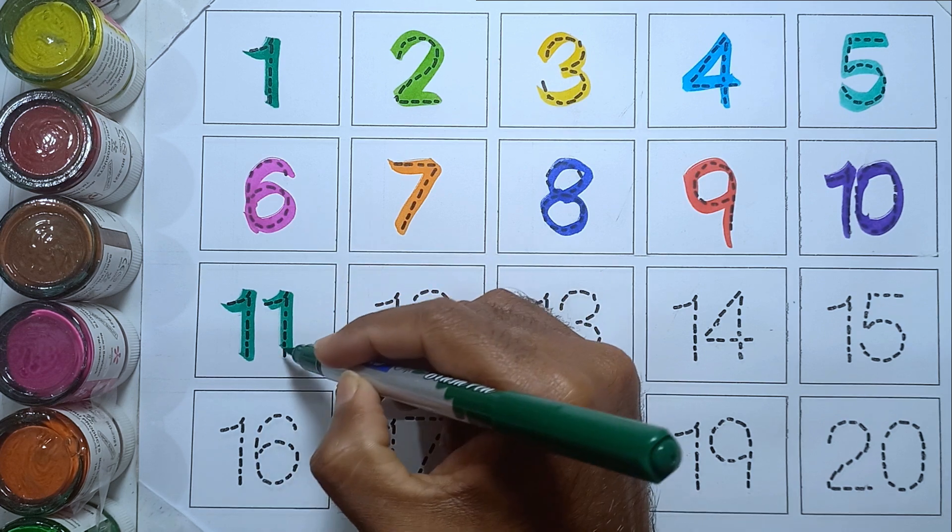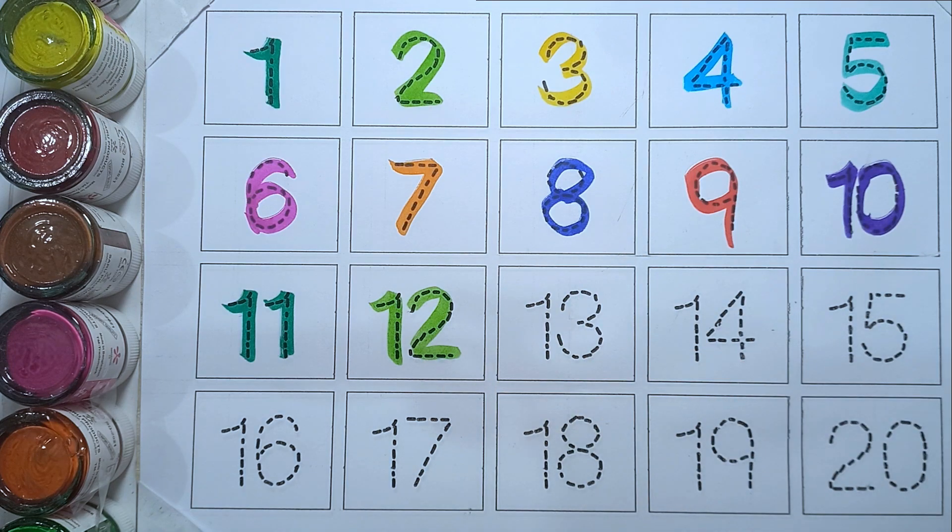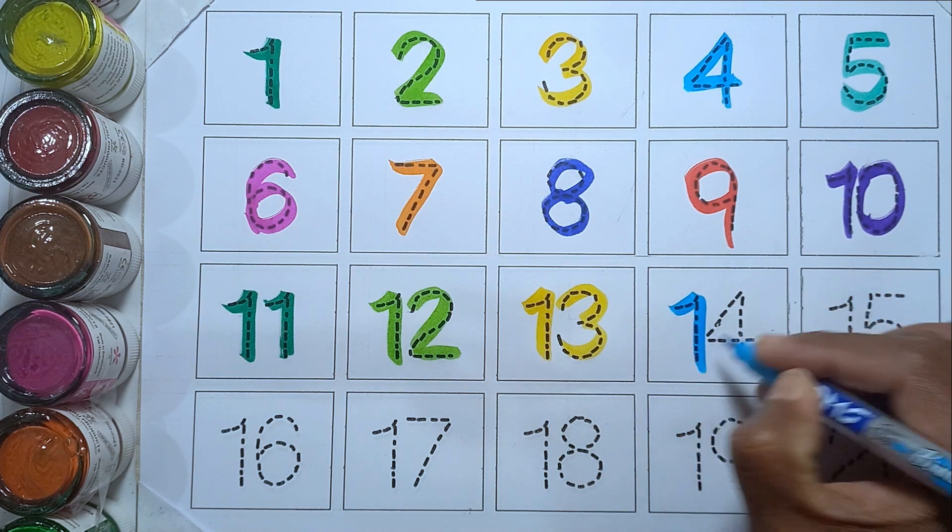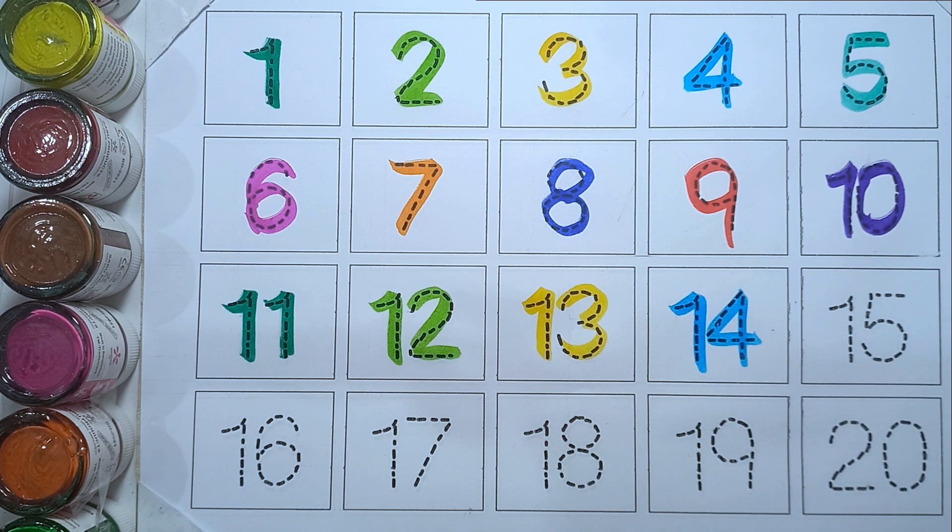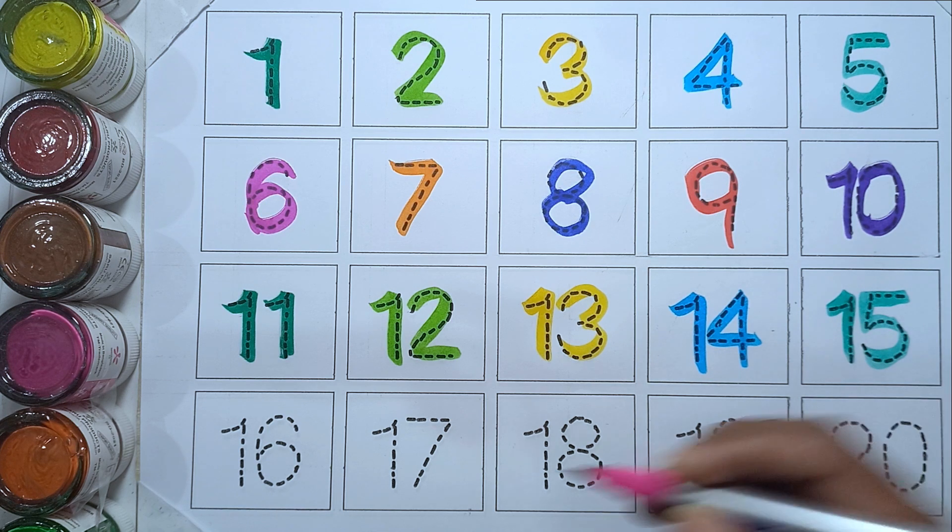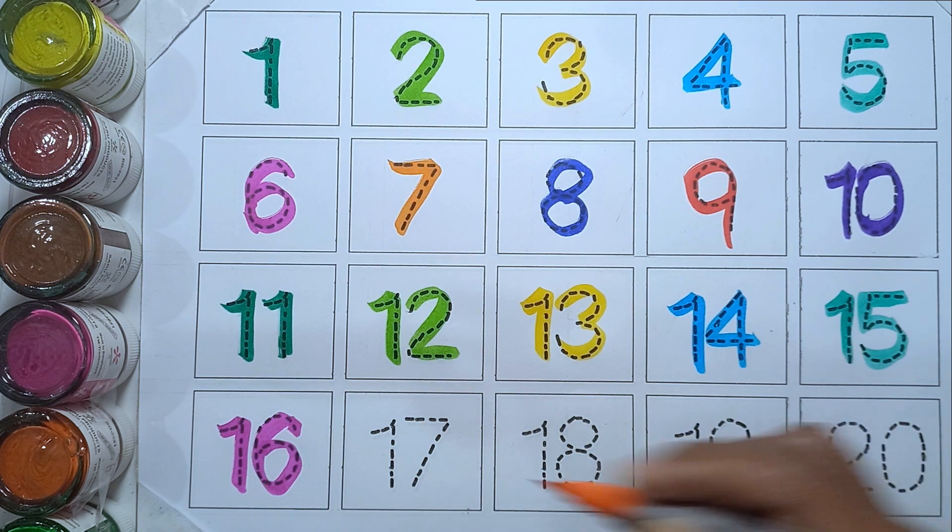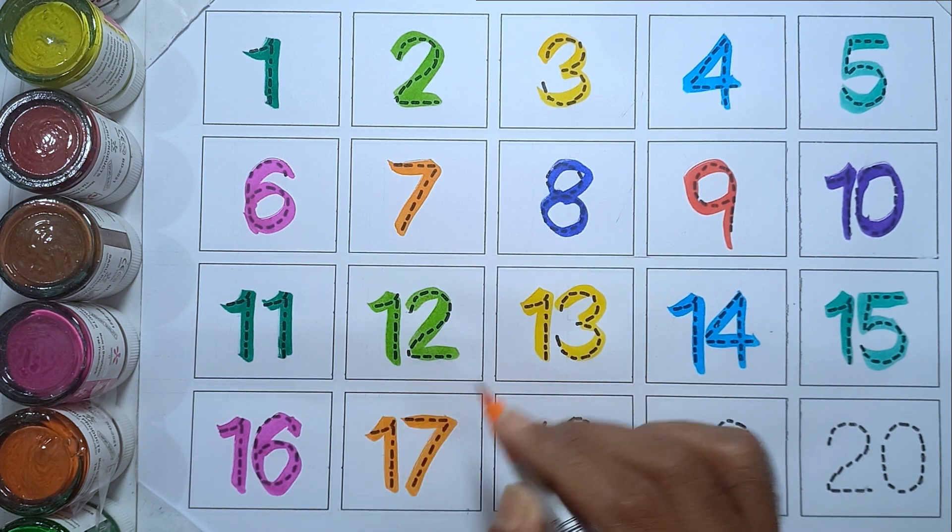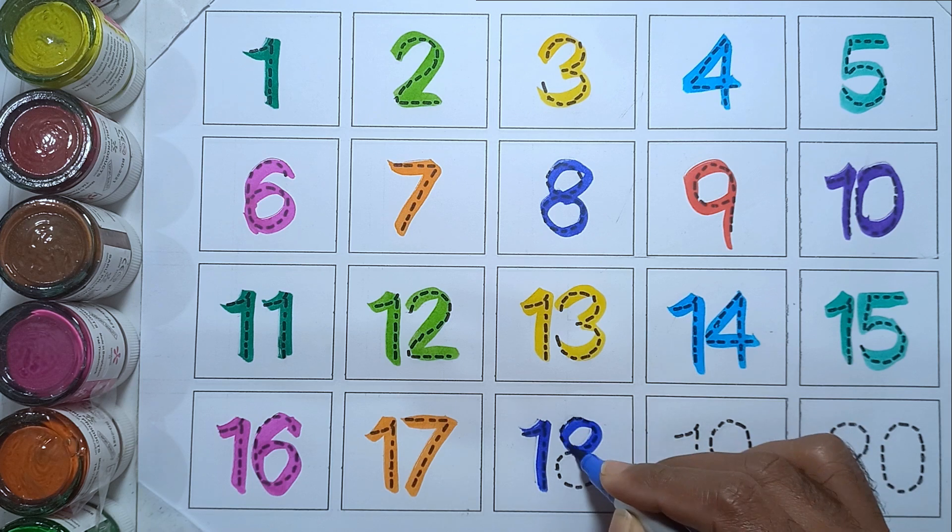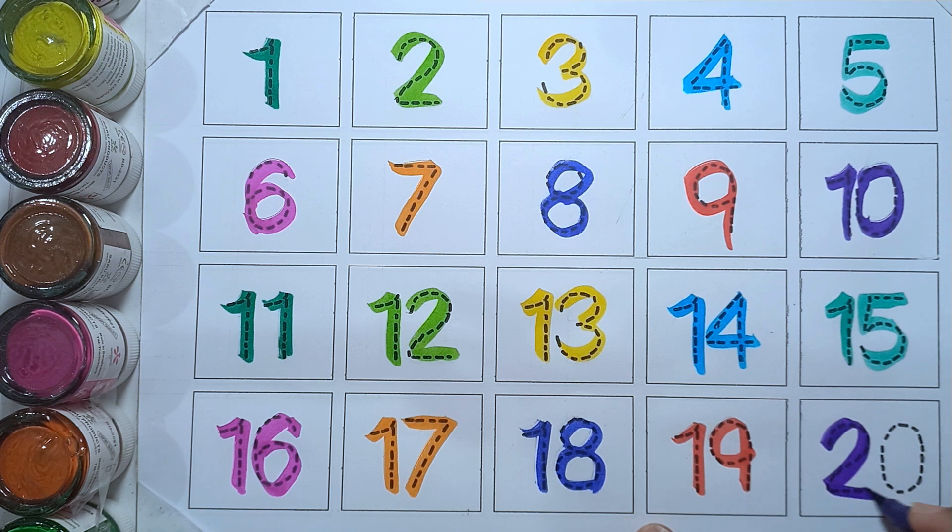Eleven. Twelve. Thirteen. Fourteen. Fifteen, sixteen. Seventeen. Eighteen, nineteen, and twenty.